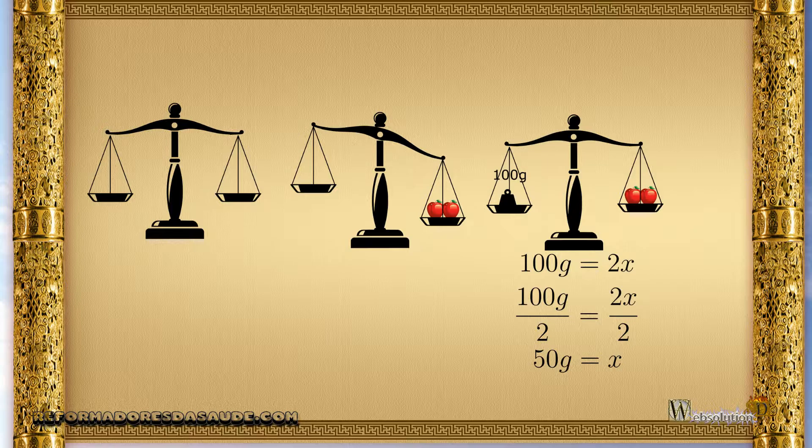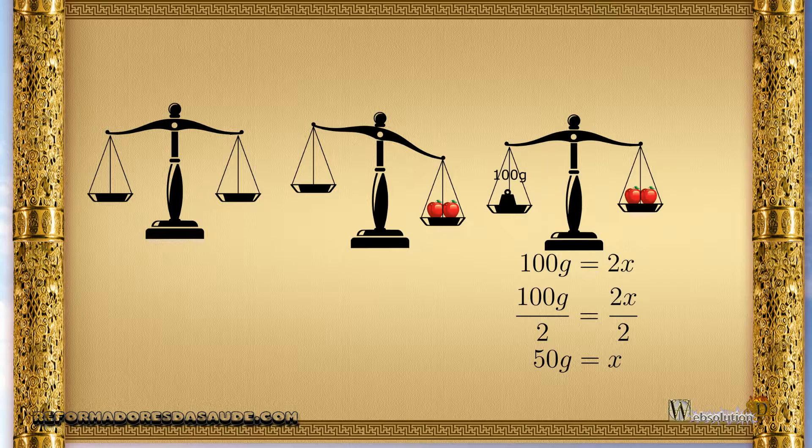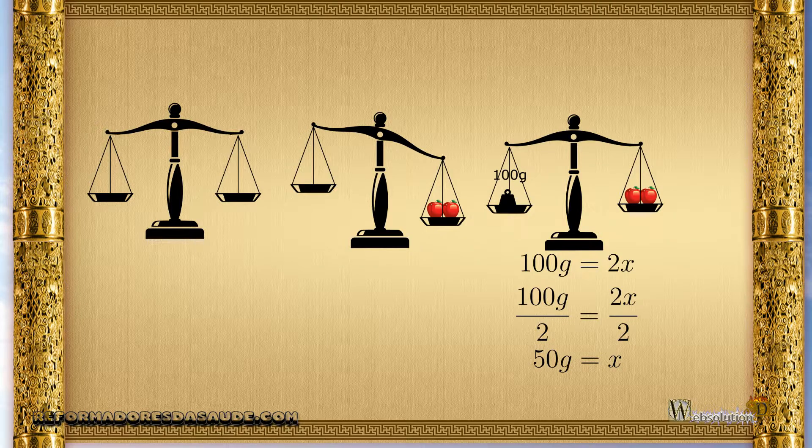But if I put a weight of 100 grams and the balance is balanced, then we have an equation. So we have that 100 grams equals 2x. To know how much each fruit weighs, if the fruits are the same, then if I divide the weight and divide the number of fruits by two, I will have the weight of one fruit, which is 50 grams.